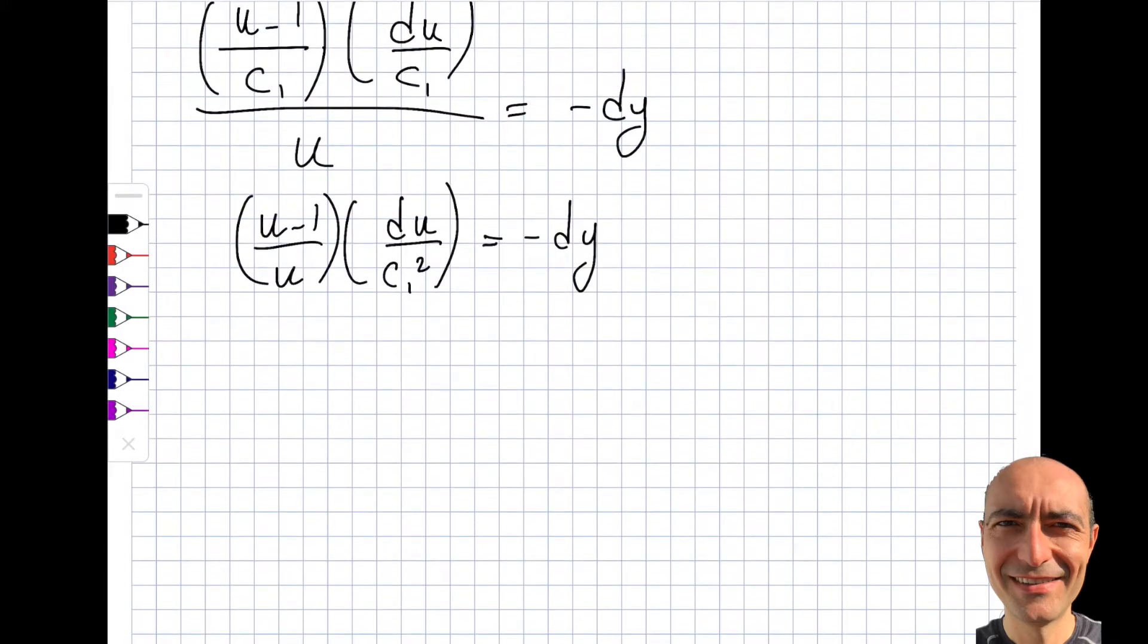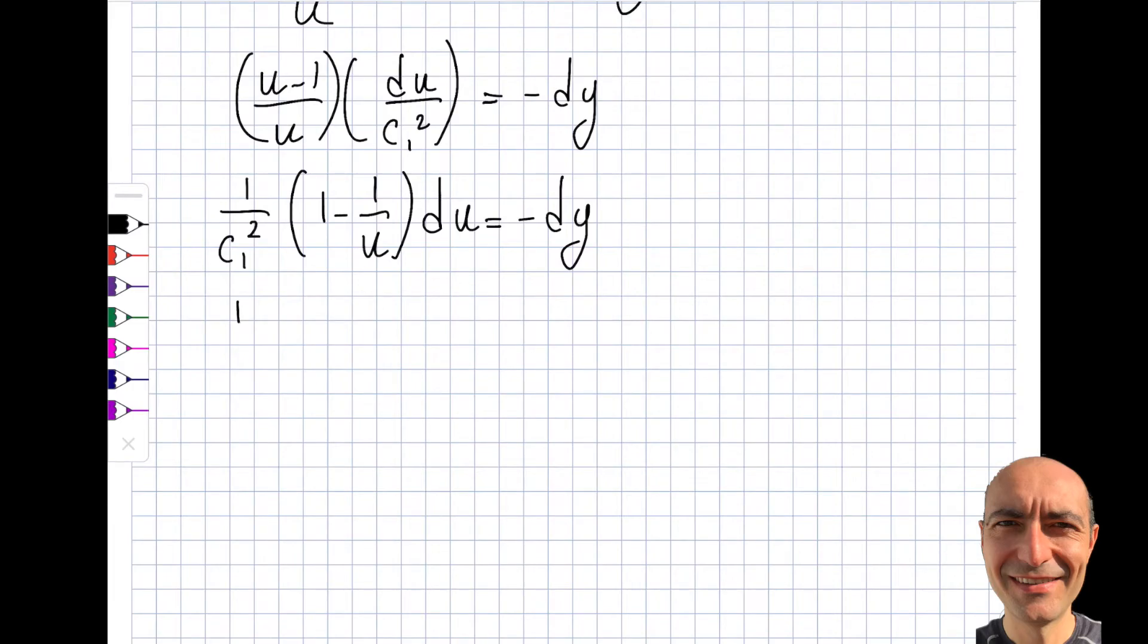Let's do a little bit of manipulation of the left-hand side. It doesn't look as comfortable to me. So it's going to be u minus 1 by u, and then it will be du by c1 square is equal to minus dy. So I'll do this now. Let's distribute this, u minus 1 by u. So I think that would be easier for me to take the integral of. Let me take out 1 by c1 square outside because it's easy for me this way. 1 minus 1 by u du is equal to minus dy.